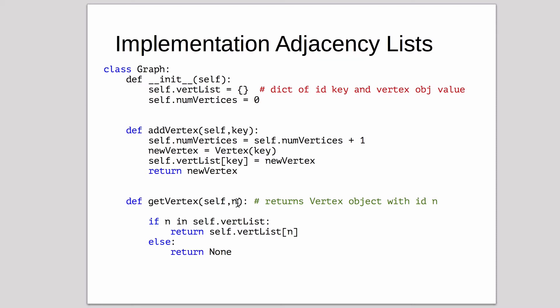GetVertex just looks up a vertex. You give it an ID. It checks if it exists. If it does, it returns the vertex object. If it doesn't, it returns none.